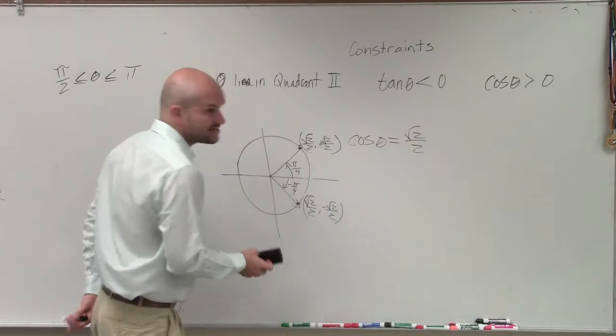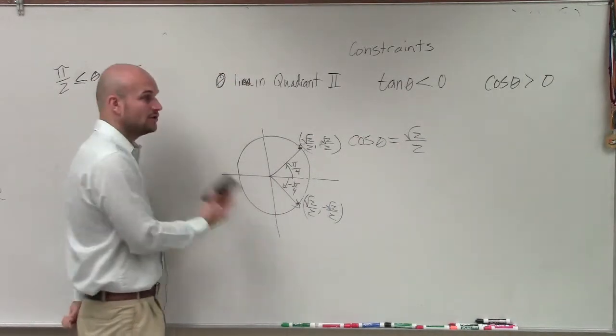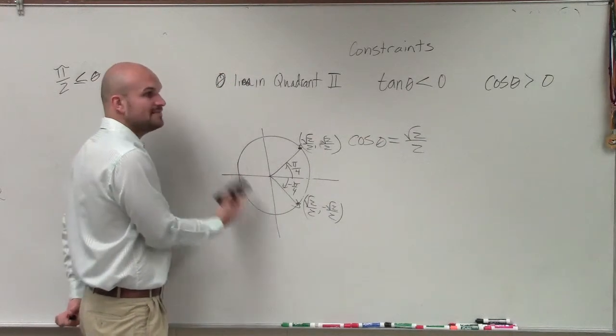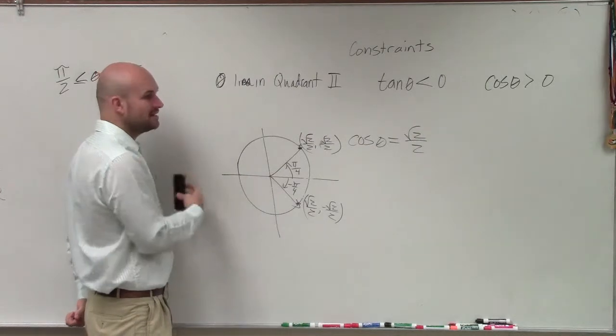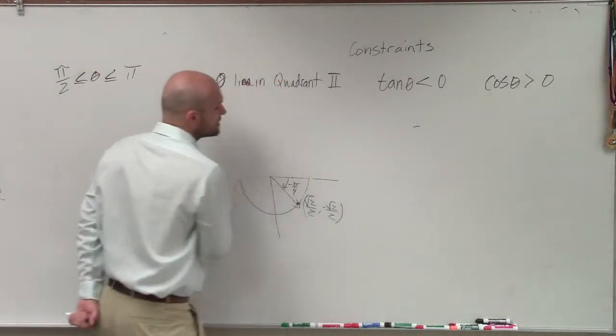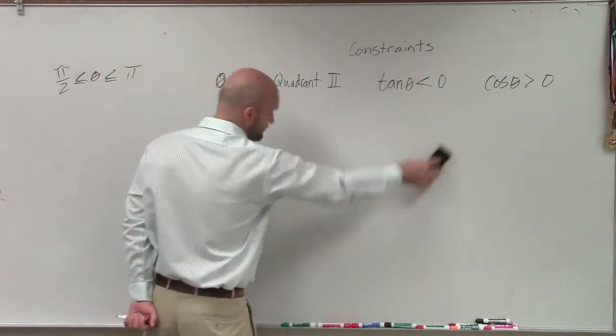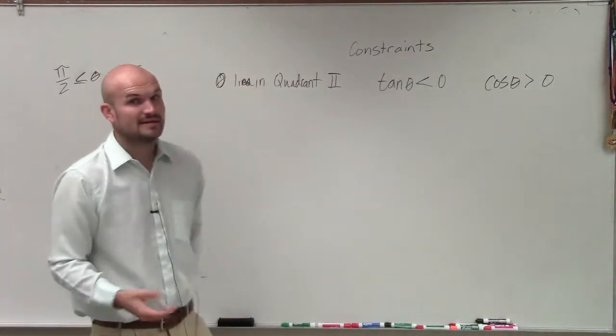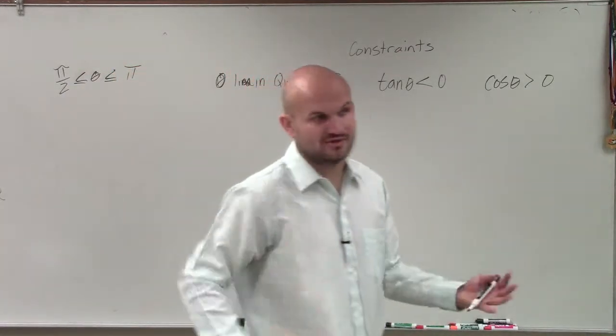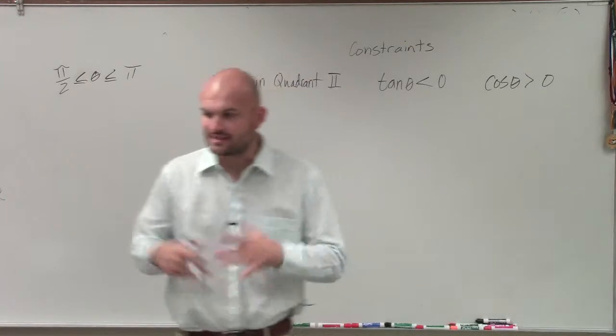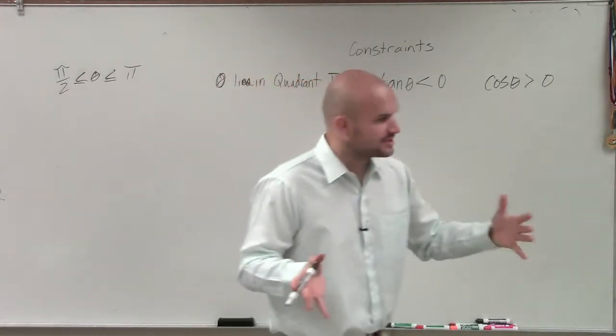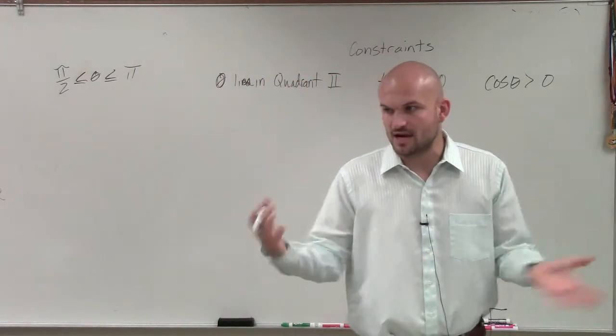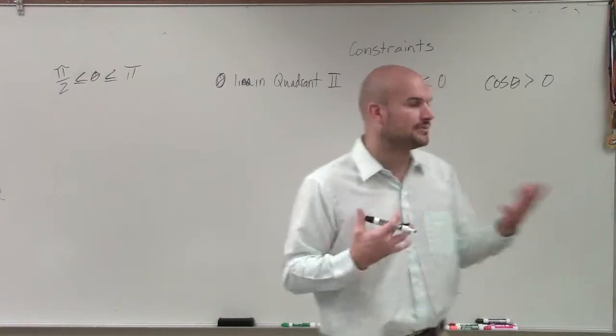So the main important thing for you guys to understand, all these points on the unit circle have two values. So we need to make sure we only find the values that are within the constraint when we're given a constraint. And we need to understand if we're not given a constraint that we need to make sure we apply both of those values. And again, we'll get more into that. Really, for this class period we're just going to talk about using constraints. We'll talk about not using constraints a little bit later.